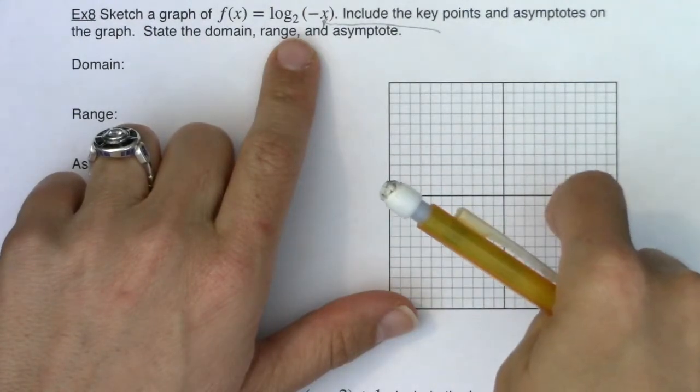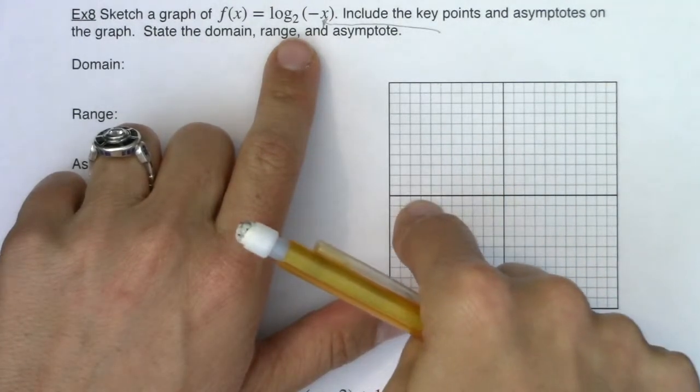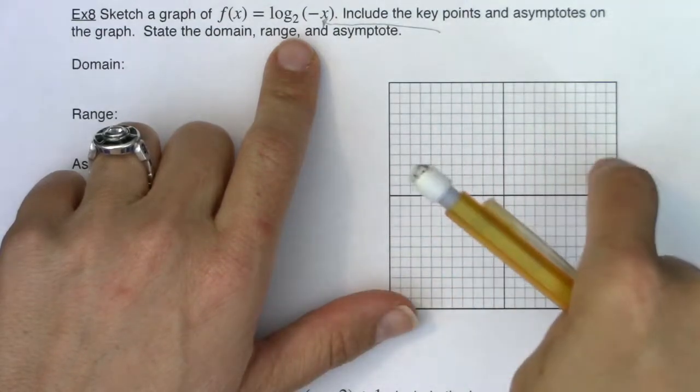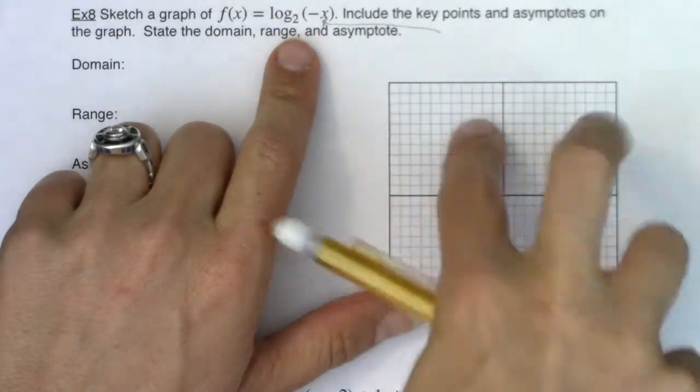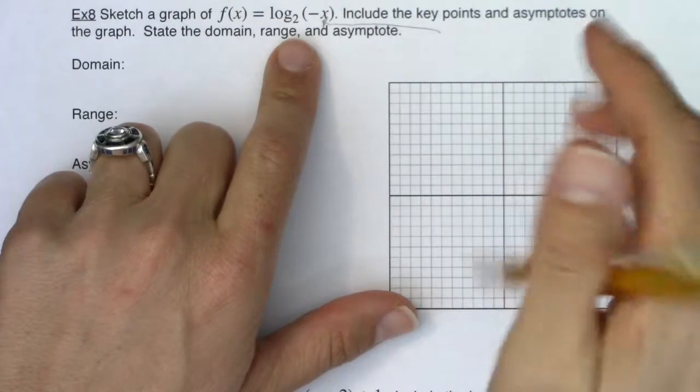Because any positive x values will now graph as negative x values and any negatives will go to positives, and that moves you left right or really it reflects you over the y-axis.